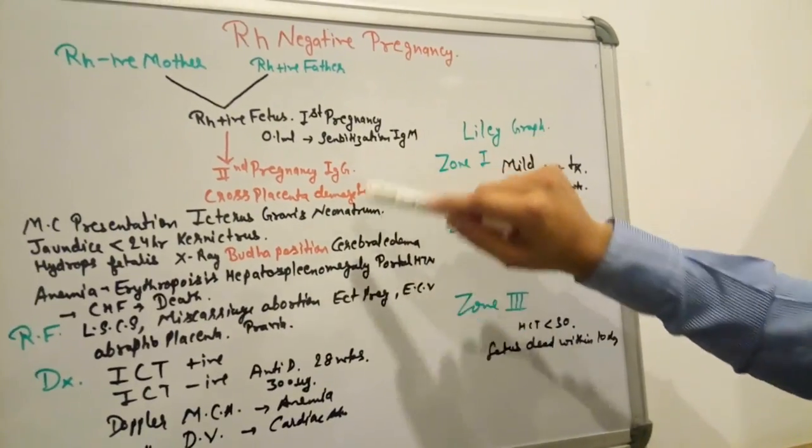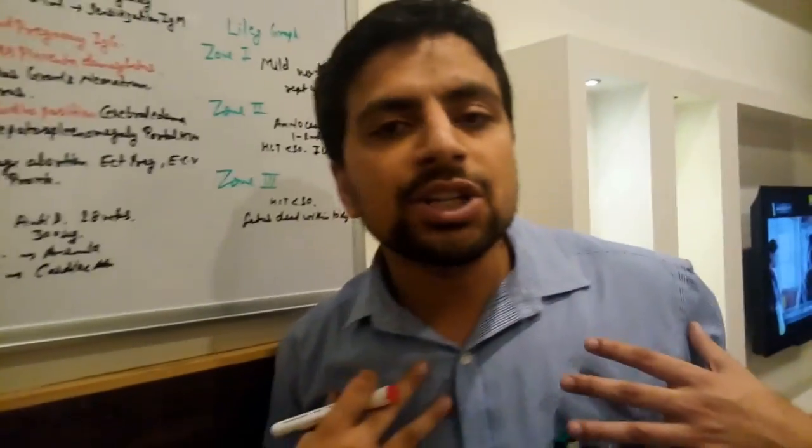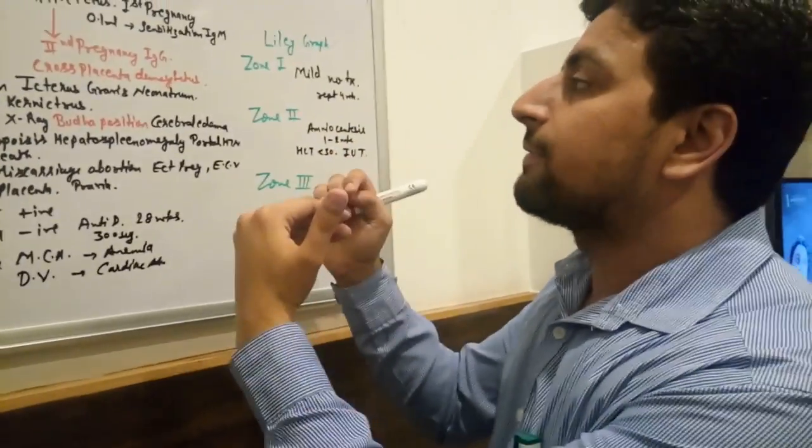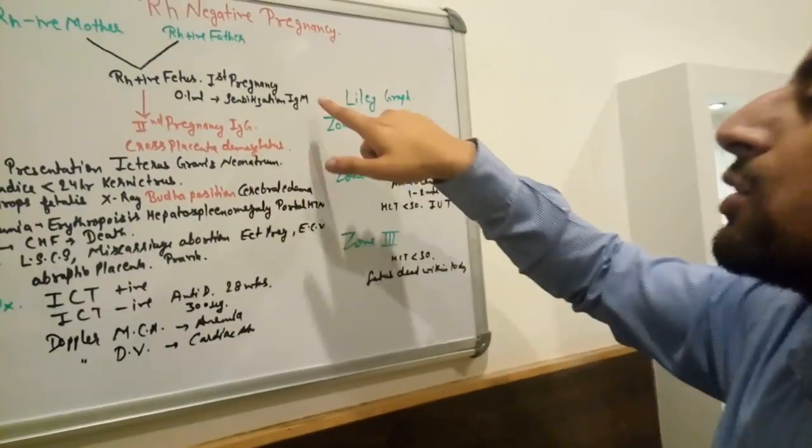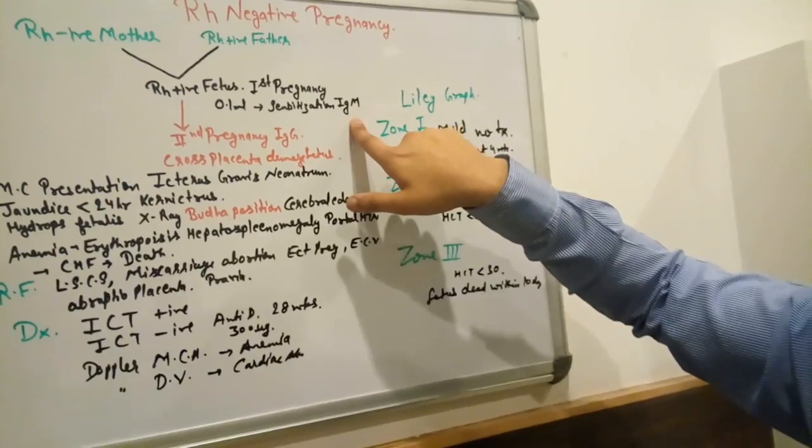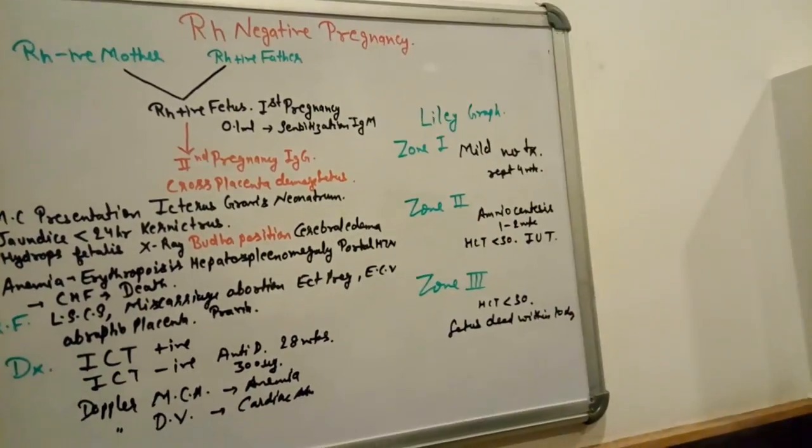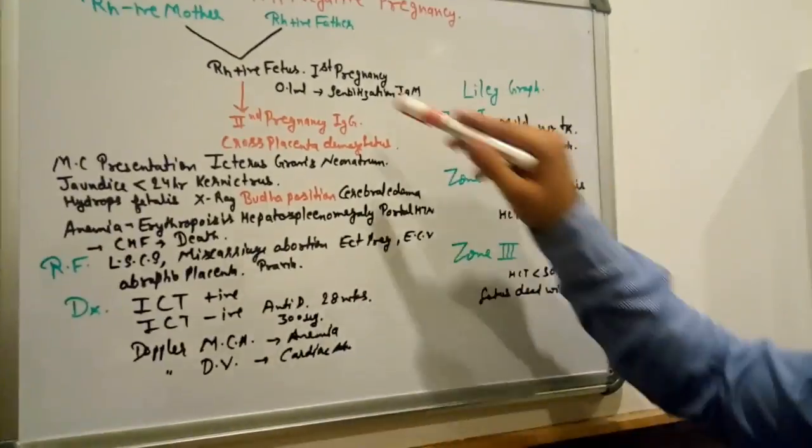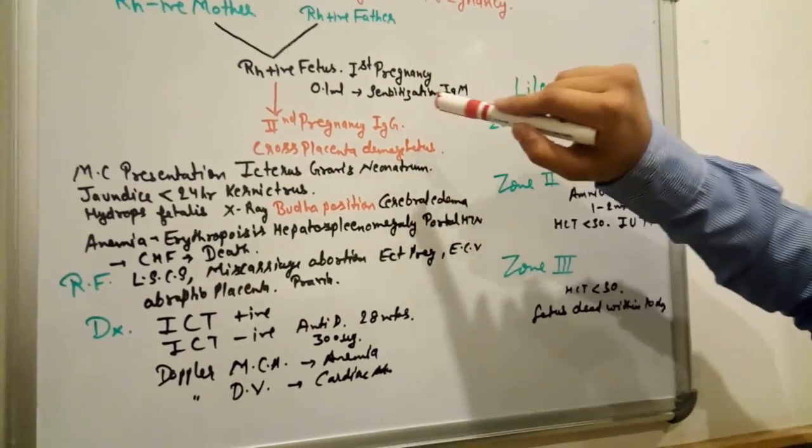If it enters, it creates IgM. In the first case, first delivery, first pregnancy, there is no risk factor because IgM does not cross the placenta. But in second pregnancy, IgG antibodies develop which can cross the placenta and damage the fetus.